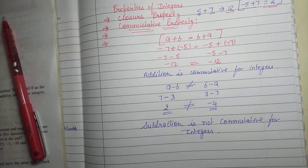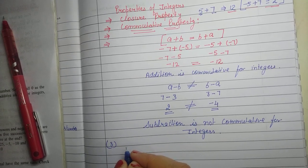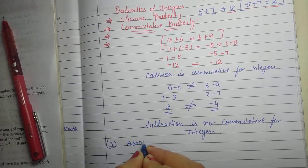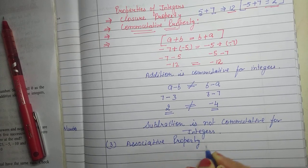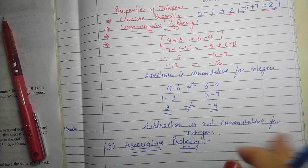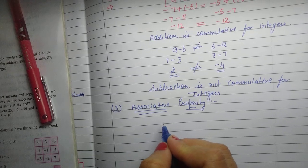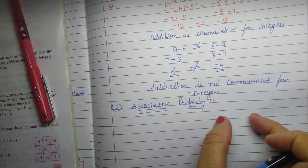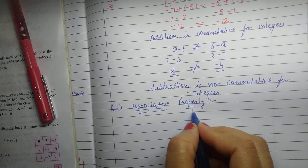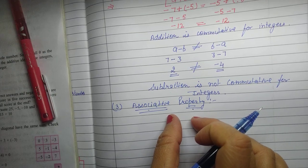Now we are going to discuss the third property: the associative property. In associative property, we take three numbers. If we add three numbers and change the grouping, we get the same result. Associative property can also be called the grouping property — if we change the group of the numbers, we still get the same result.